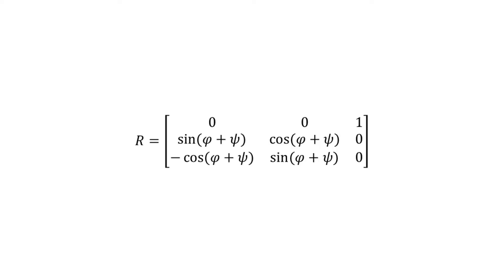We end up with this as our final rotation matrix. The problem is that all of these sine and cosine terms are based on phi plus psi. So, if, say, the sum was 6.